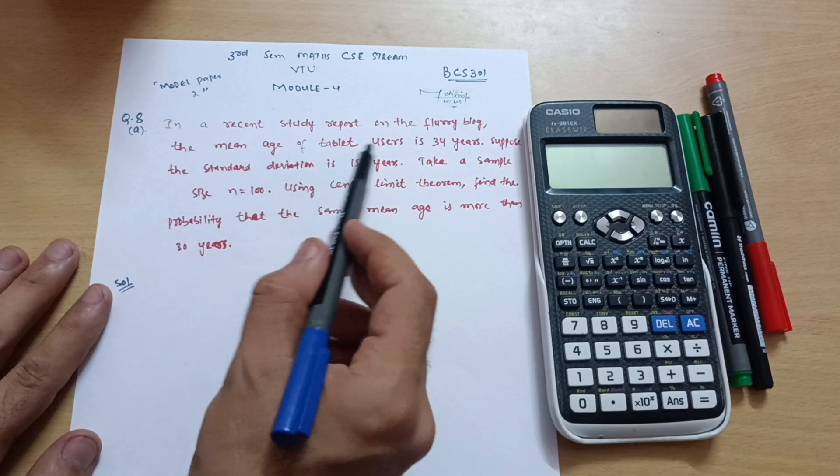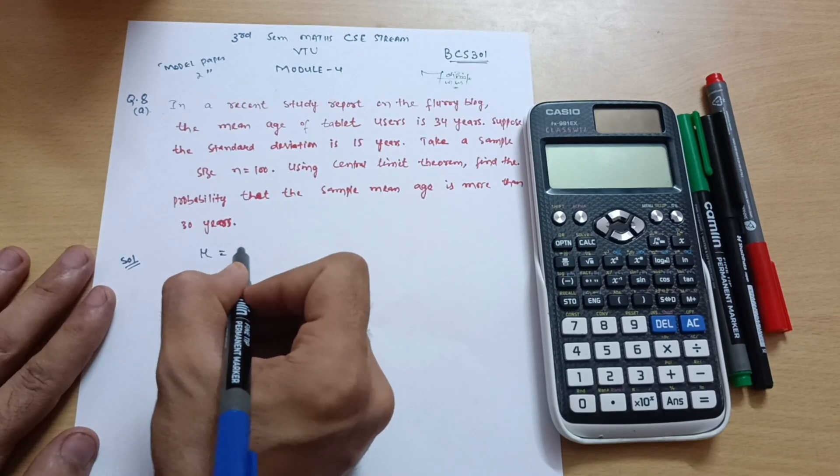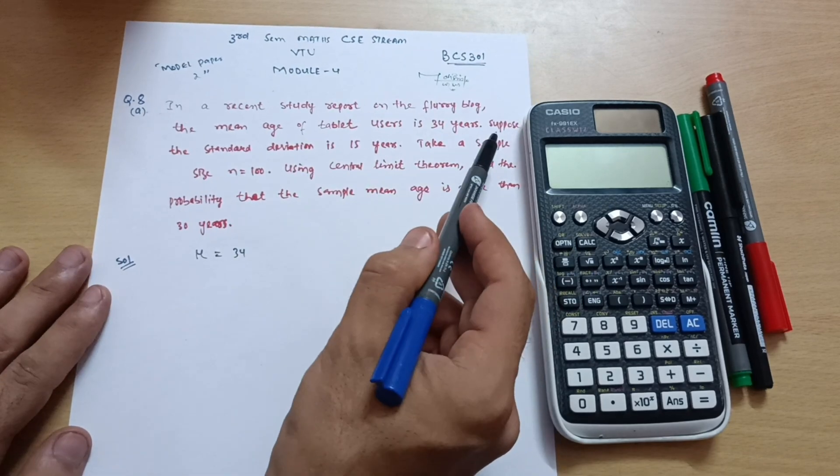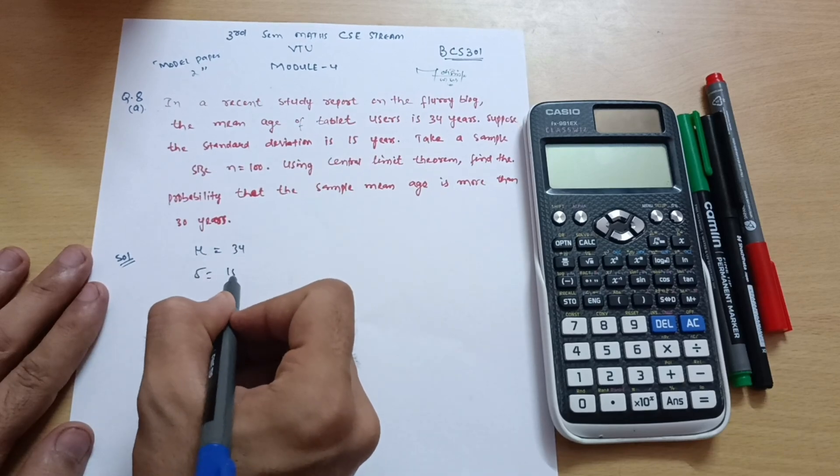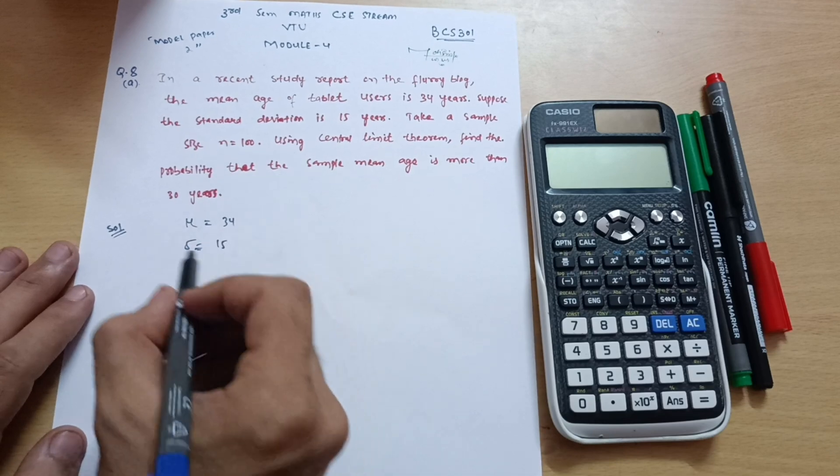What is the mean? Mean age of tablet users is 34 years, that is mu equals 34. Suppose the standard deviation is 15, means sigma equals 15. And take a sample size n equals 100.